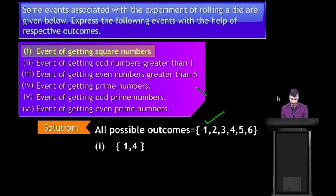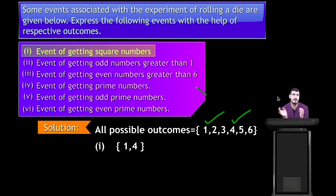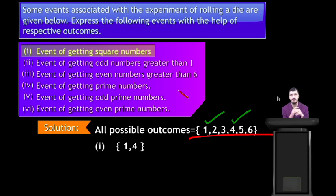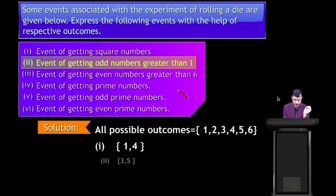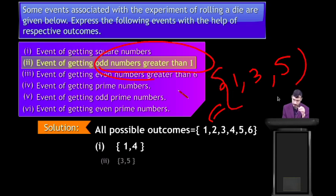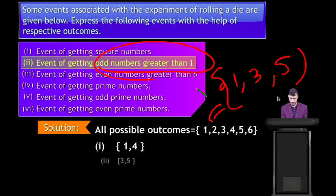Second question: event of getting odd numbers greater than 1. Possible outcomes are 1, 2, 3, 4, 5, 6. Odd numbers are 1, 3 and 5. Odd numbers greater than 1 means 3 and 5, so there are 2 outcomes.